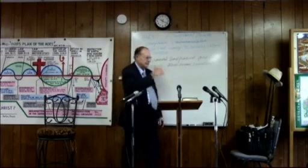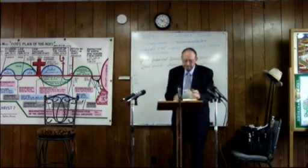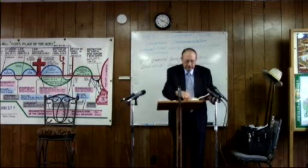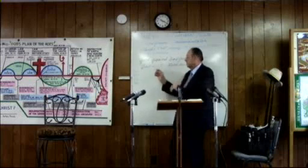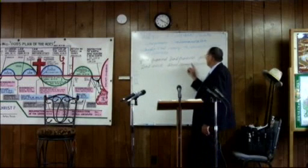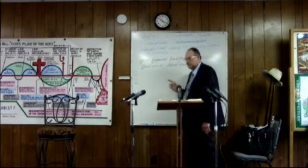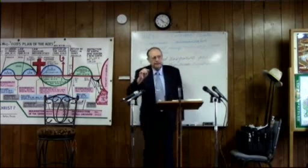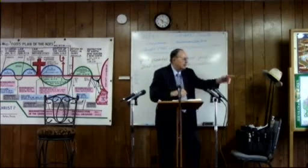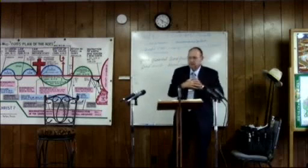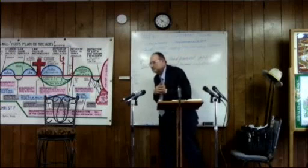Now let's talk about us today and mankind in general. Go to Mark, the fourth chapter. I want you to think about good ground and bad ground, good and bad seed, and blood-borne infections. How do we get our Adamic nature? From the blood. Where does our blood come from? Your father.